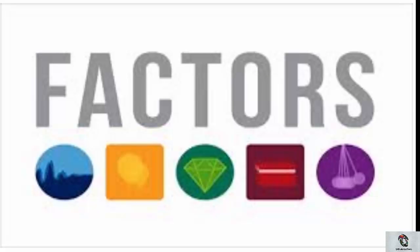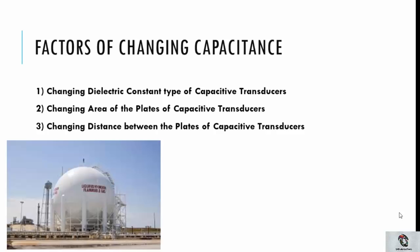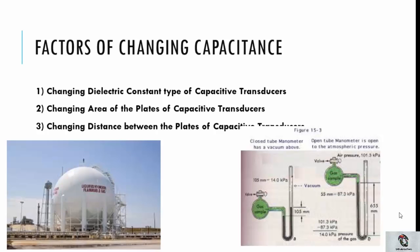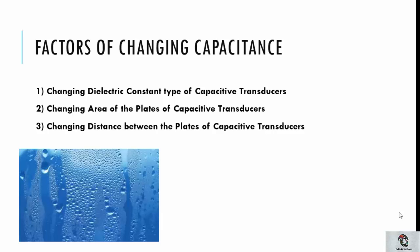Before moving ahead to pros and cons, we must know about the factors that cause a change in capacitance. The first factor is the dielectric constant. A change in the dielectric constant leads to a change in capacitance. This principle is used for measurement of level in hydrogen containers, where the change in the level of hydrogen between two plates results in a change of the dielectric constant. Apart from this, it can be used for measurement of humidity, moisture content, etc.